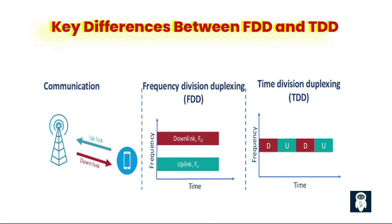Both FDD and TDD have their own advantages and are used in different communication systems based on their specific requirements. FDD is commonly used in cellular networks, while TDD is often utilized in applications such as wireless local area networks (LANs) and some cellular technologies like LTE-TDD and 5G-TDD.